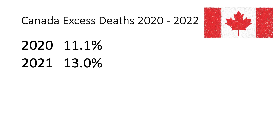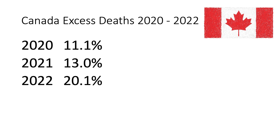So what happened to the excess deaths in Canada in 2021? Well, they went up even higher and Canada experienced 13% excess deaths, even though a vaccine was available by early 2021. By the end of 2021, the pandemic was essentially over and well over 80% of Canadians were vaccinated. So what happened to excess deaths in 2022? They not only went up again, but they went up dramatically. In 2022, there were 20.1% more deaths than anyone had expected.